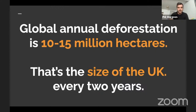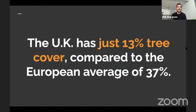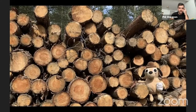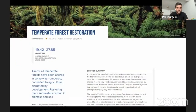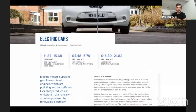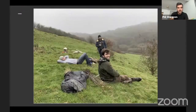The UK has just 13 percent tree cover, which is way below the European average of around 37 percent. Project Drawdown suggests that temperate forest restoration could sequester about 27-28 gigatons of CO2, which is actually twice the potential impact of electric cars, often hailed as the one and only savior of the world.